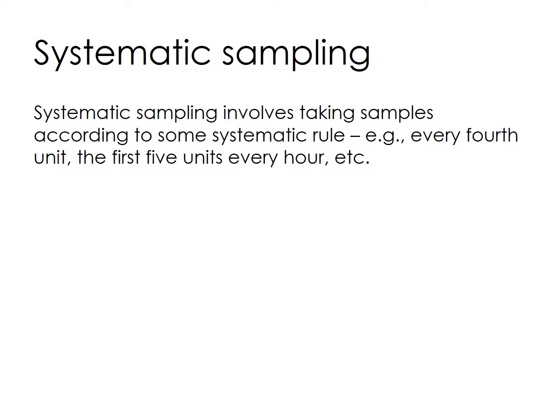Five consecutive bills are selected and the processing time is measured. One danger of using systematic sampling is that the systematic rule may match some underlying structure and bias the sample.